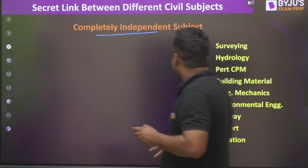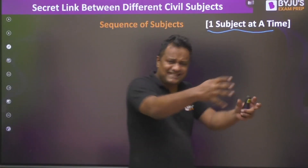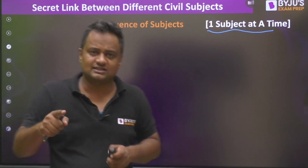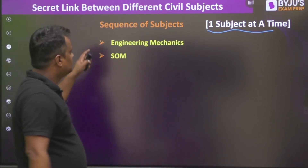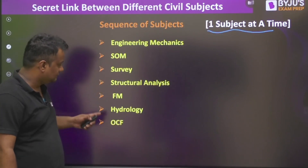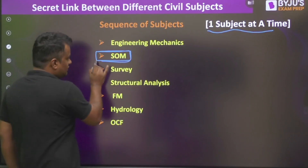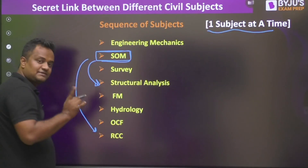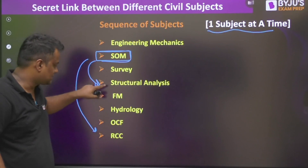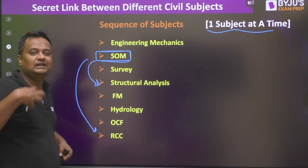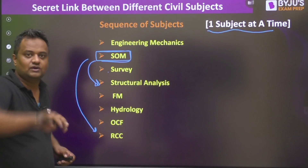This is the secret link of the various subjects. If your strategy is to study one subject at a time — taking a subject, mastering the concepts, solving questions, then moving to the next — you can start with: Engineering Mechanics, SOM, Surveying, Structural Analysis, FM, then Hydrology. The dependent subject comes first. Also, all heavy subjects should not be in one continuous go — insert smaller topics like Surveying and Hydrology in between so you get a moral boost, completing six subjects in three months.